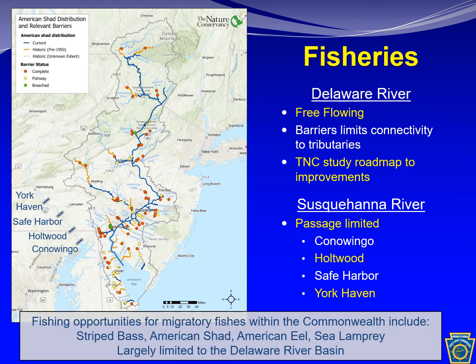Four hydroelectric plants on the Susquehanna River — the Conowingo, Holtwood, Safe Harbor, and York Haven — operate fish passage facilities specifically for migratory fishes. Their efficiency, however, is problematic for sustaining fish passage. Migratory fish populations within the Susquehanna River Basin are generally considered under restoration status.